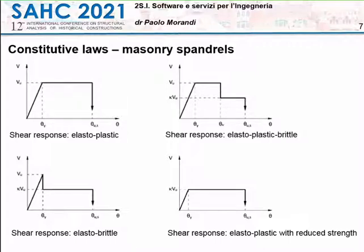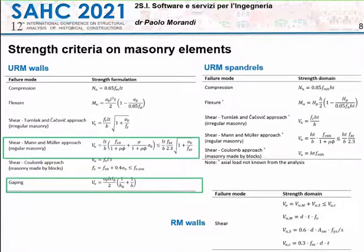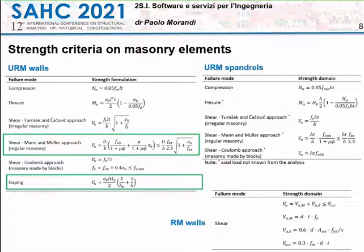For masonry piers, it is possible to use elastoplastic, elastoplastic brittle, elastic brittle, and elastoplastic with reduced strength constitutive laws. For the strength criteria implemented in the software, for reinforced masonry walls there are many criteria from literature — for example, flexure and compression, shear following the Coulomb approach. There are also other shear criteria such as the Mann-Müller approach for regular brick masonry. Recently, a gapping mechanism has been included, which captures the in-plane response of masonry with unfilled head joints.